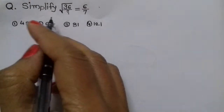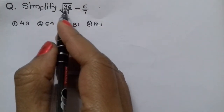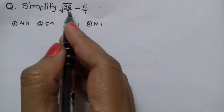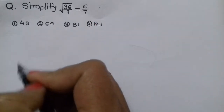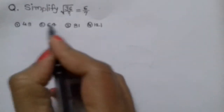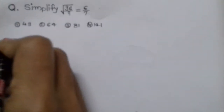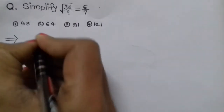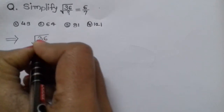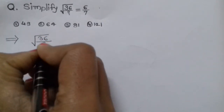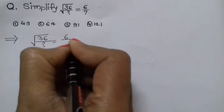Question: Simplify √(36/?) = 6/7. The options are: 49, 64, 81, 121.